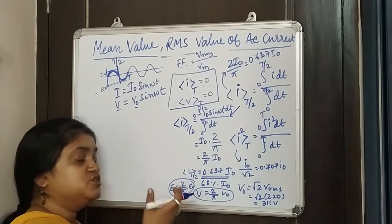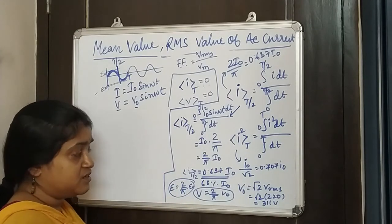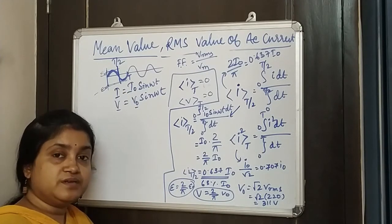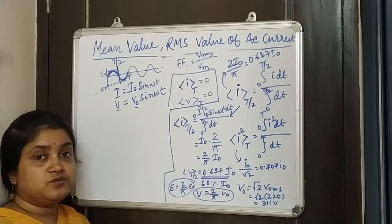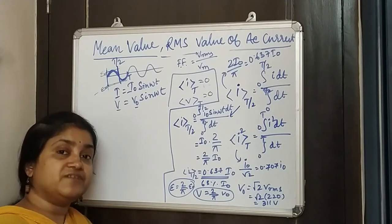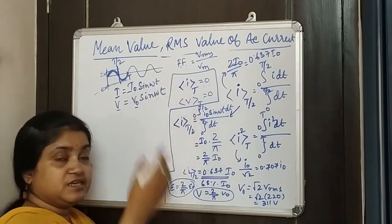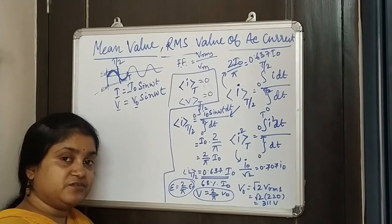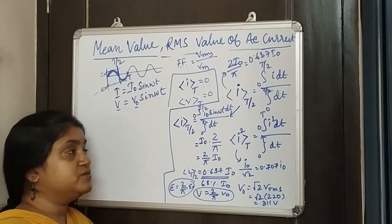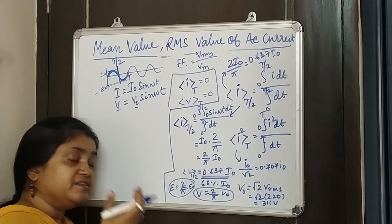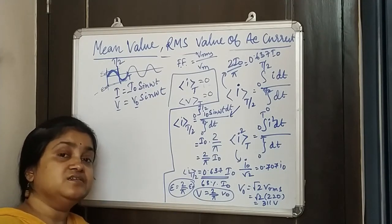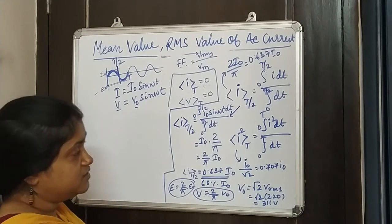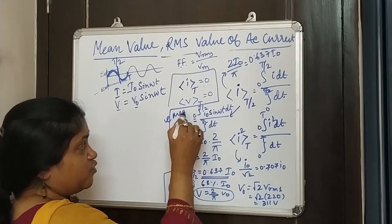Now talking about RMS value — why do we do this kind of calculation? Because normal instruments like ammeters, galvanometers, or voltmeters need to show deflection. But if we take the average over the whole cycle, these instruments don't show the expected deflection. So for all calculation and experimental purposes, we depend on either the mean value or the RMS value — the root mean square value.